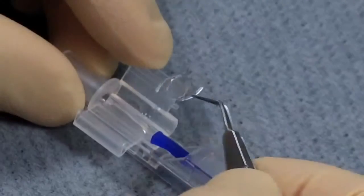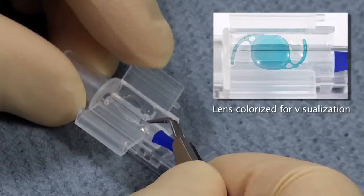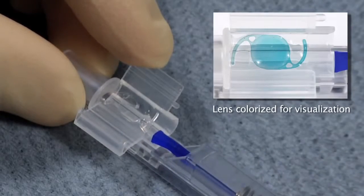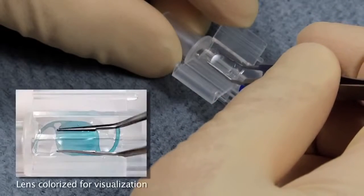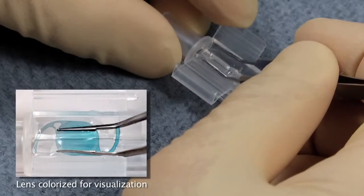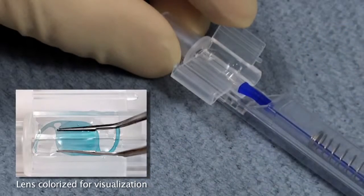Position the lens in the middle of the loading chamber so that the anterior side is up and the lens is in a reverse S orientation. Apply slight downward pressure with the forceps to push the lens and haptics down and ensure they are properly seated under the grooves.